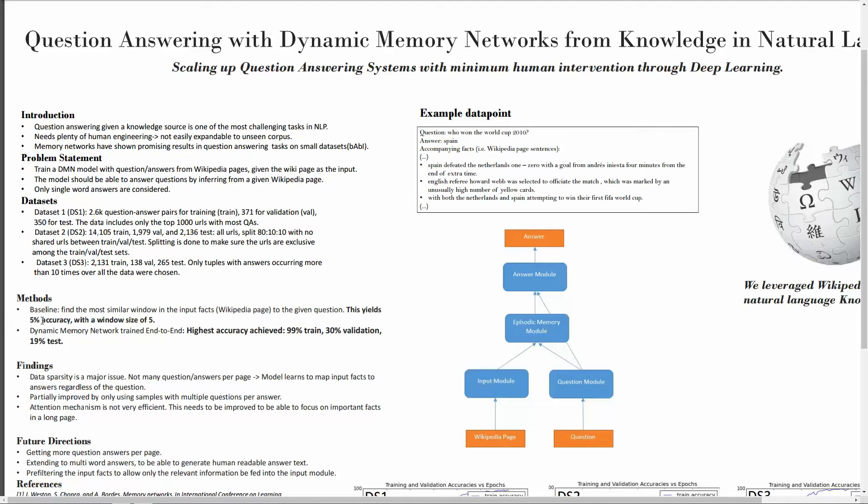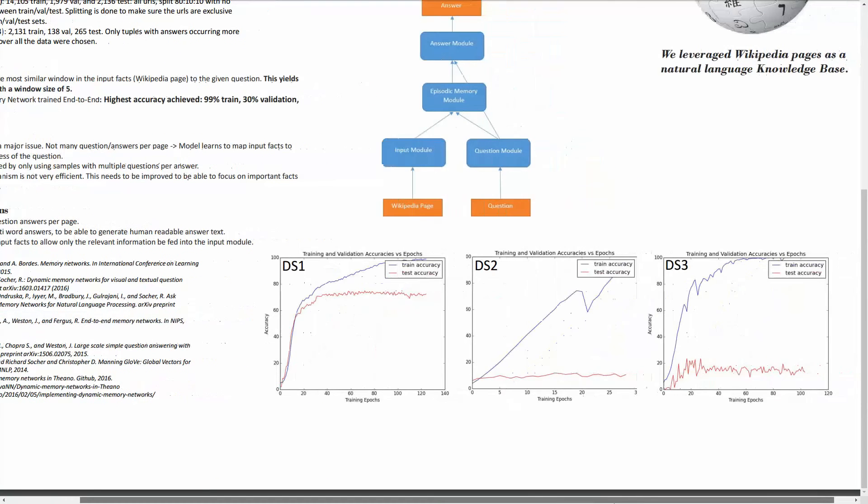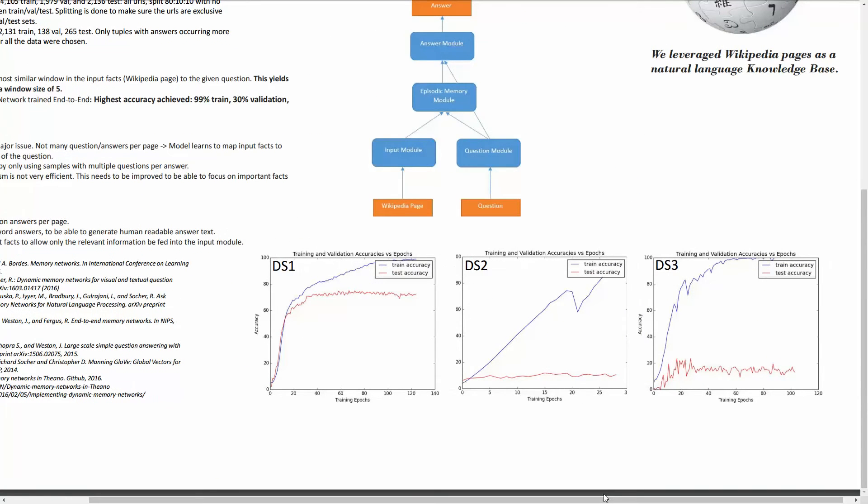However, with a window size of 5, our dynamic memory network trained end-to-end was able to achieve 99% accuracy on training, 30% on validation, and 90% on test. As the results show on DS1, we achieved about 70% on validation.